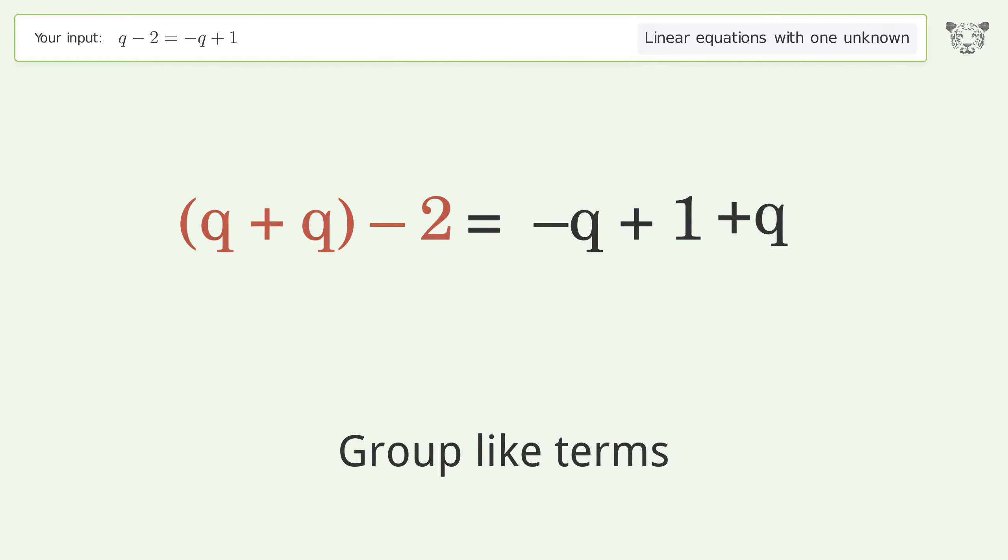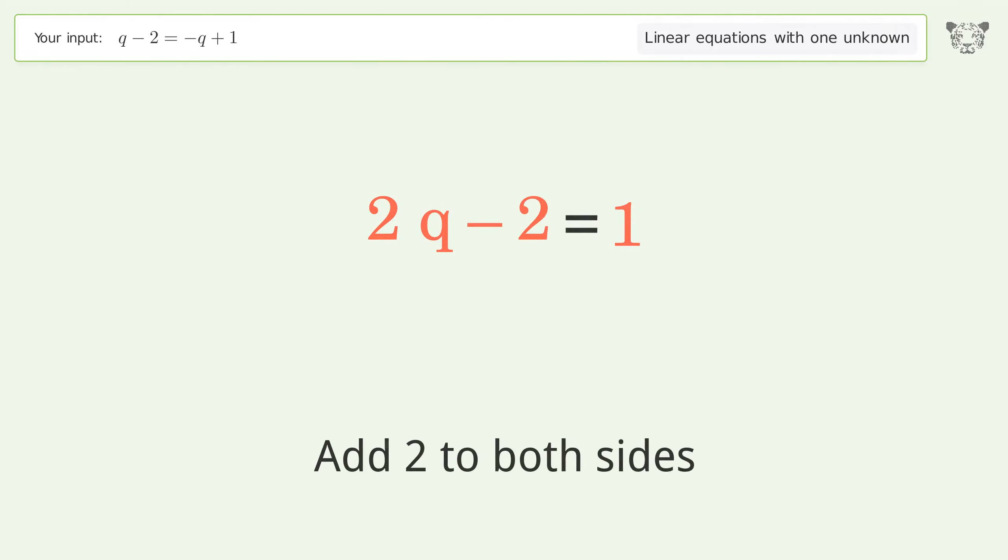Group all q terms on the left side of the equation. Add q to both sides, then group like terms and simplify the arithmetic.